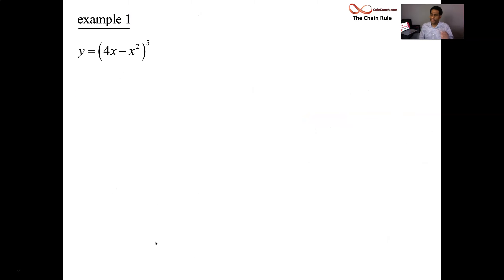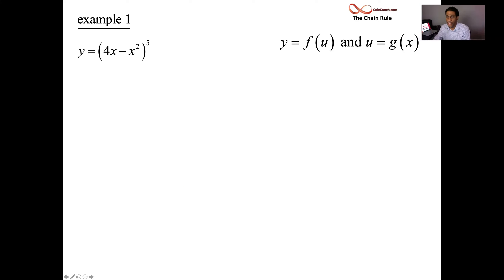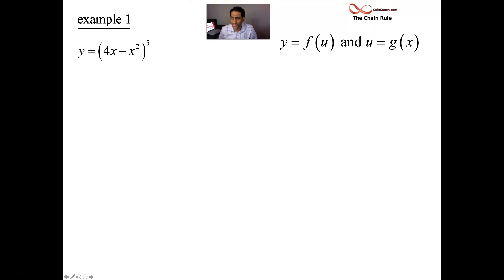Here's example one: 4x minus x squared, now raised to the fifth. There's an inside function — 4x minus x squared — and then there's an outside function — that quantity raised to the fifth power. So we let y equal f of u, and u equals g of x. Remember: take dy/du, then take du/dx, and multiply them together. In the dy/du, you'll have some u's floating around — just replace them.